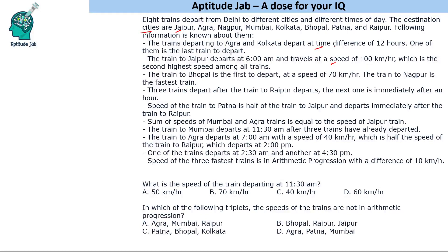This puzzle is based on a schedule where trains depart at different times. Most statements talk about a difference of 12 hours. The key insight is that the first column we should keep is the order in which the trains depart, and we will arrange them based on that order, with time as another column.